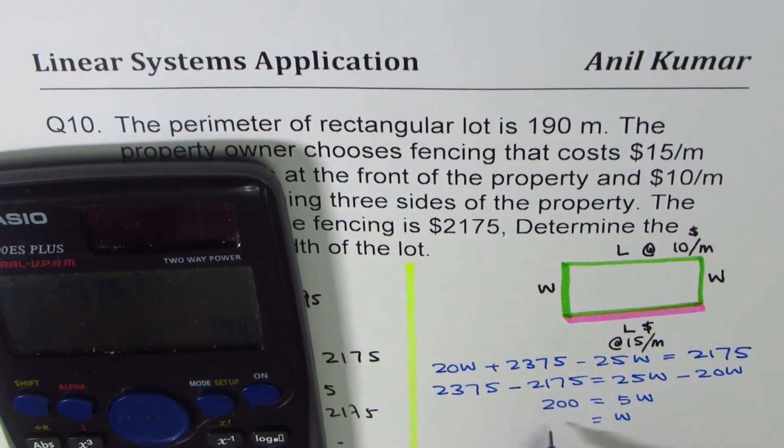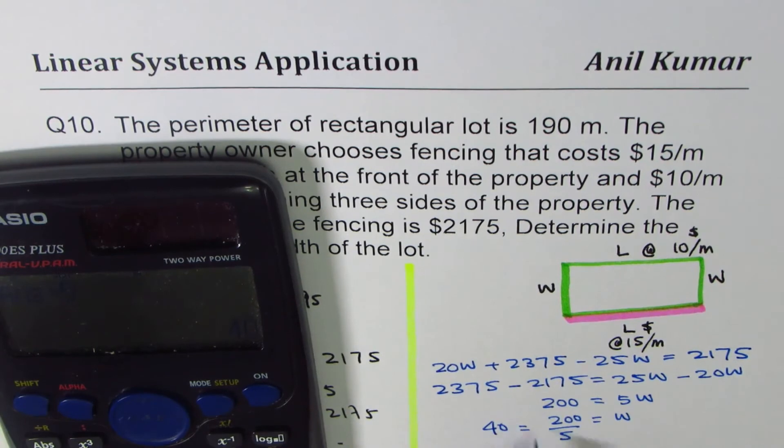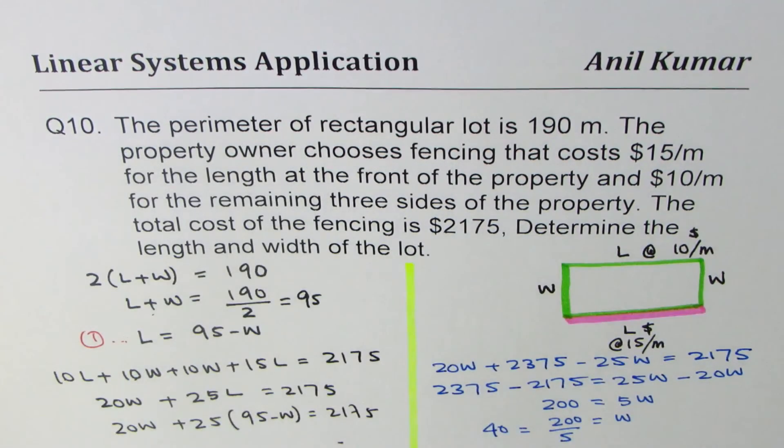And then W will be 200 divided by 5. Let's divide this by 5. 40. So the width is 40.